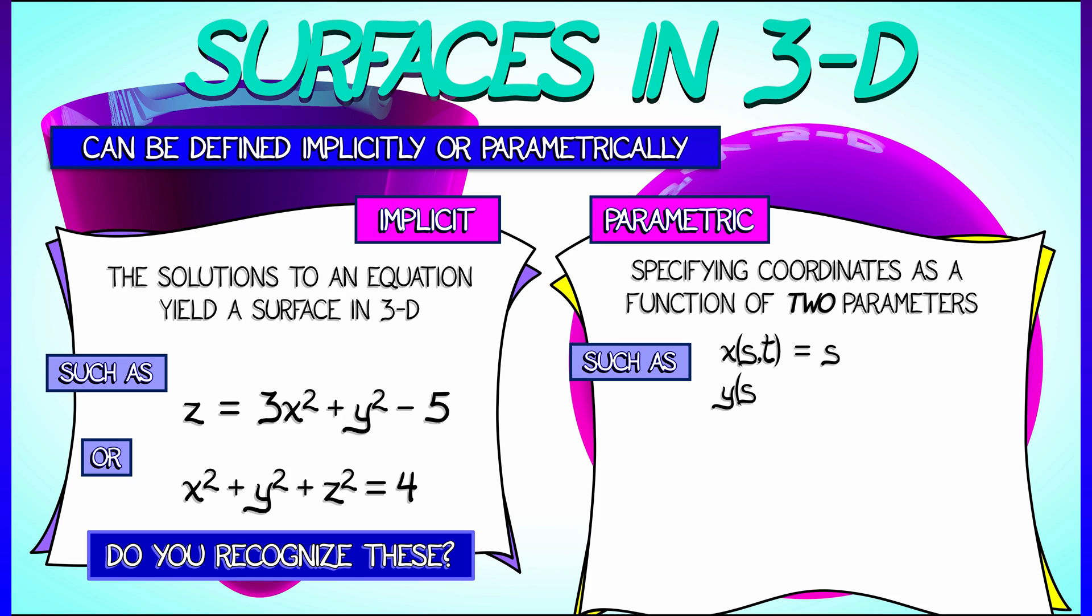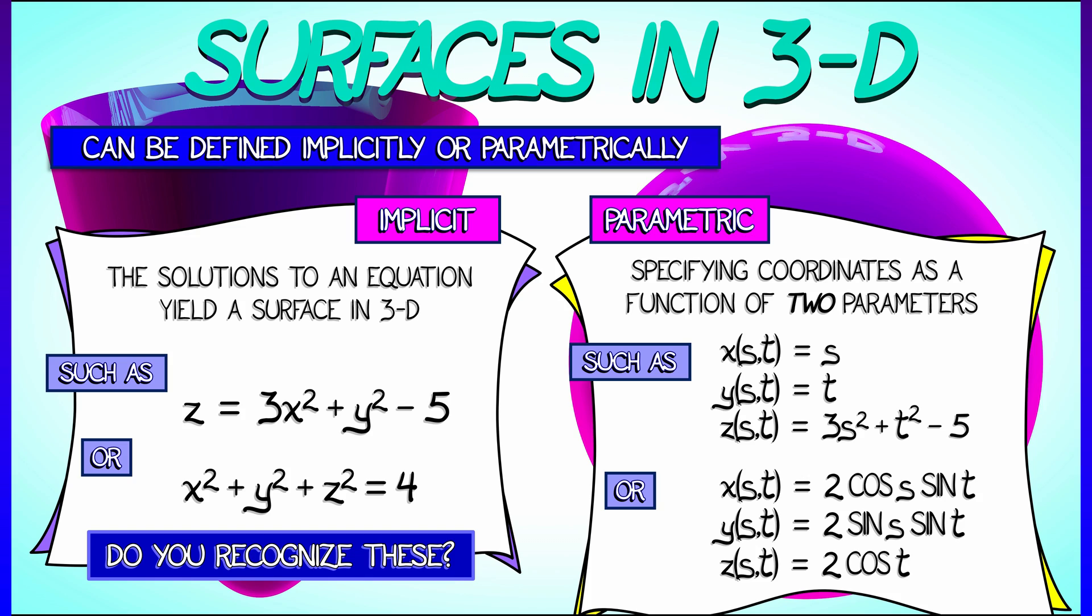Well, let's say those parameters are, I don't know, s and t. You could choose whatever you want. Then you need to specify what the x, the y, and the z coordinates are as a function of those two parameters.